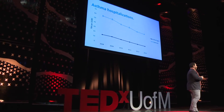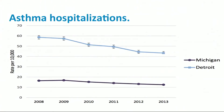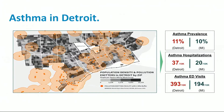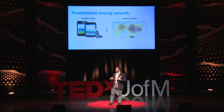On asthma: our asthma hospitalization rate is three times as high as the rest of the state of Michigan — largely because of the number of high emitters across the city, which is relatively industrial. That yields children not in school and not learning. What we're doing is equipping children with inhalers fitted with sensors. Every time a child uses the inhaler, it sends data to the cloud, allowing us to generate an asthma heat map and provide families and doctors with real-time information about a child's risk of an exacerbation.